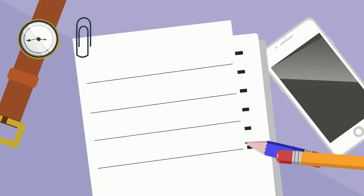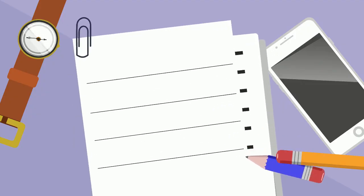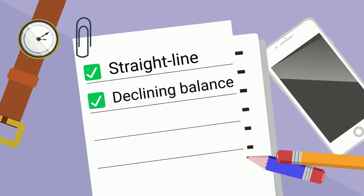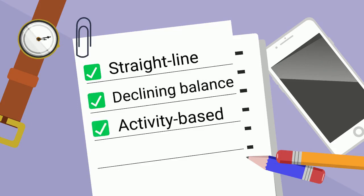There are several depreciation methods that can be used. Straight-line depreciation evenly distributes the cost over the useful life of the asset — each year has the same amount of depreciation. Declining balance depreciation takes the most depreciation in the beginning years and then tapers off. Activity-based depreciation uses activity to calculate depreciation — if the asset is used more, more is depreciated that year.